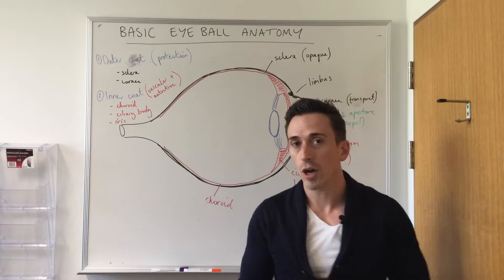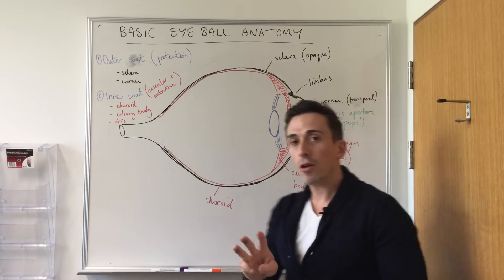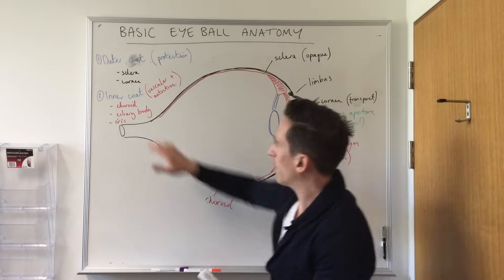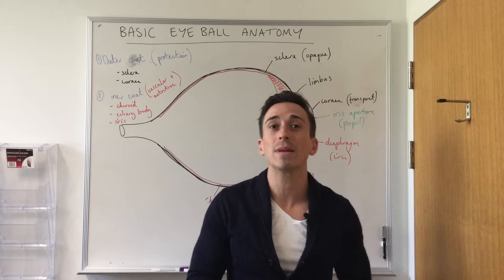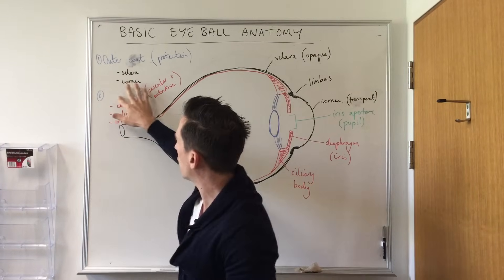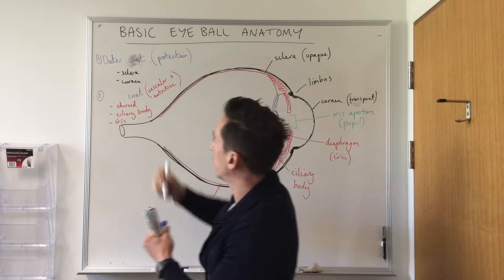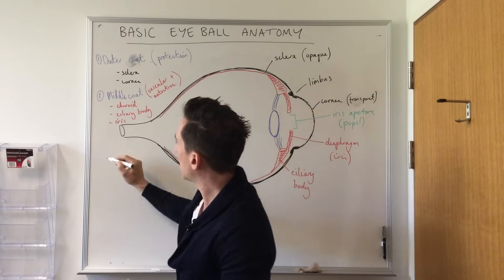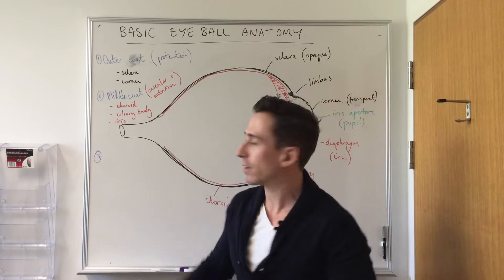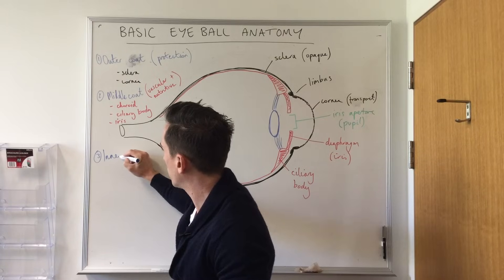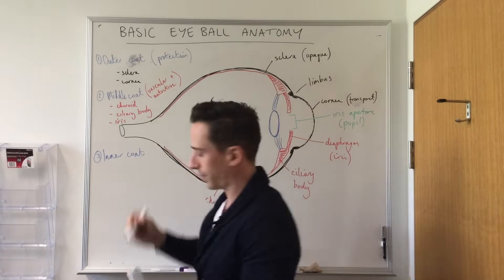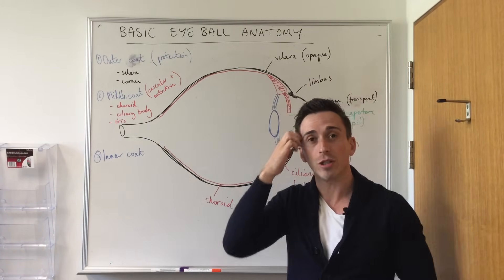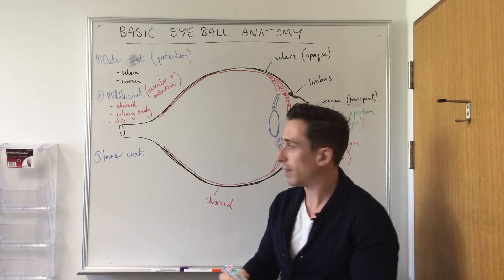Just to clarify — those three structures, the choroid, ciliary bodies, and iris, make up the middle coat, not the inner coat as I mistakenly said. Number three is the inner coat, which is basically the retina.